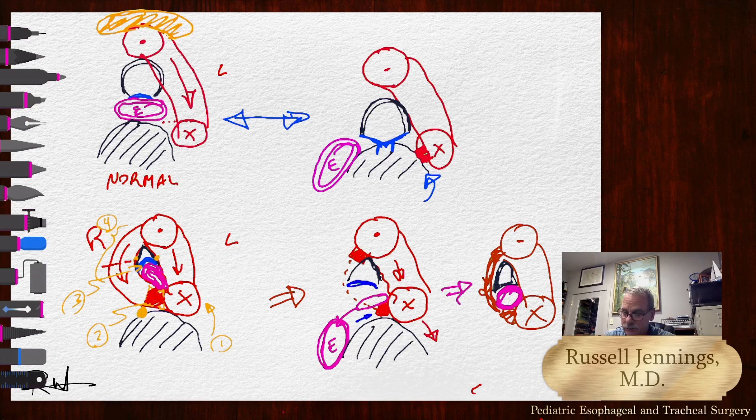So the treatment is to go do this, divide the recapitulate right arch, rotate the esophagus, perform a descending aortopexy as opposed to a tracheopexy.